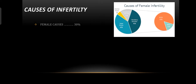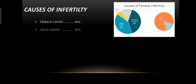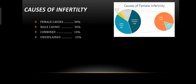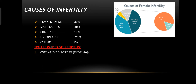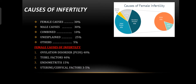What are the causes of infertility? There are different causes of infertility. The commonest causes are: female causes around 30 percent, male causes around 30 percent, combined male and female causes 10 percent, unexplained infertility in 25 percent of cases, and other causes including five percent. Within the 30 percent female causes, the main cause is ovulation disorder, which accounts for around 40 percent; tubal factors 40 percent; endometritis 15 percent; and uterine or cervical factors three to five percent.